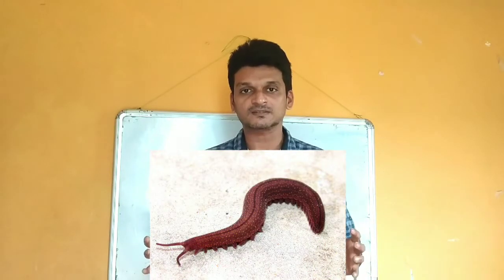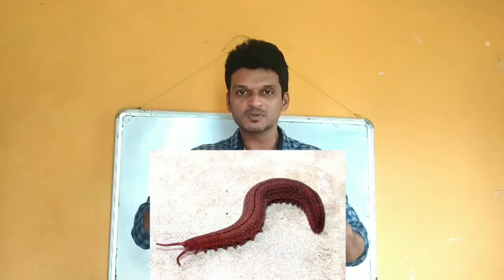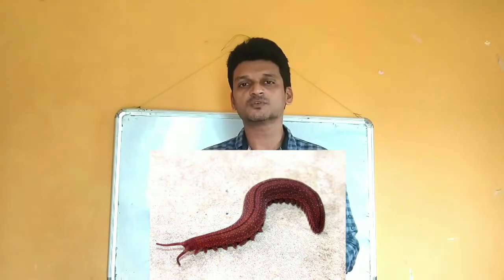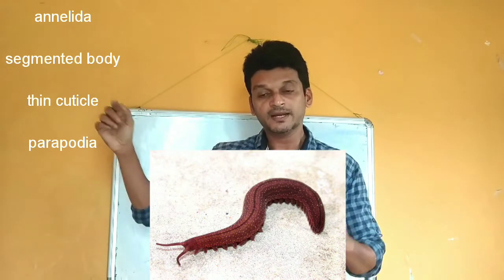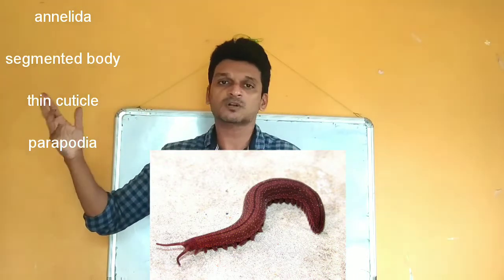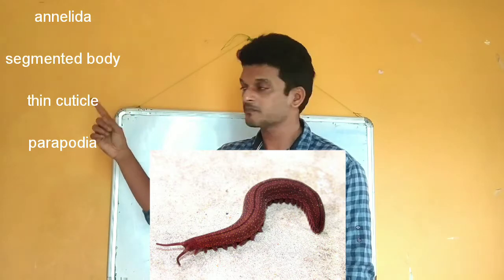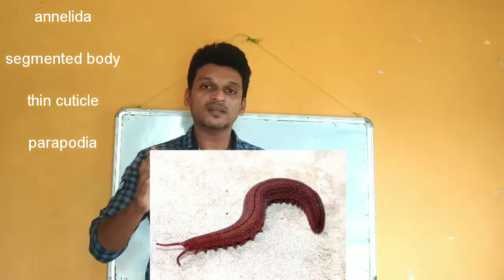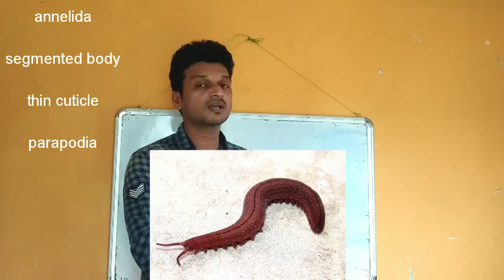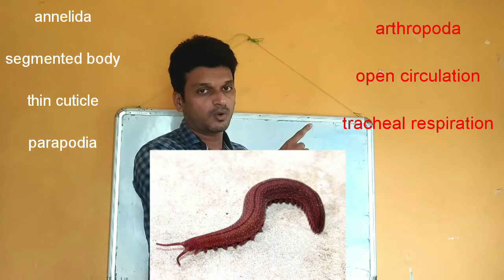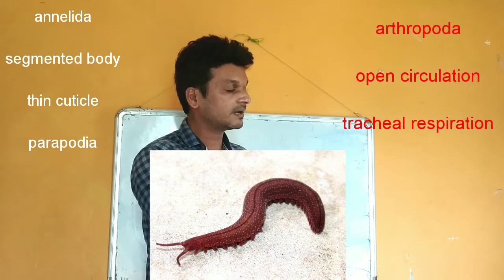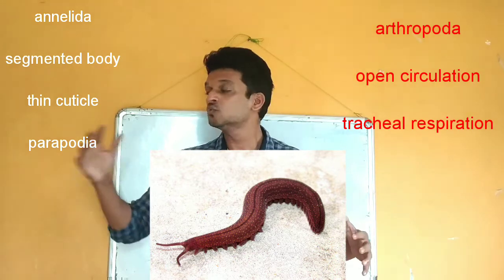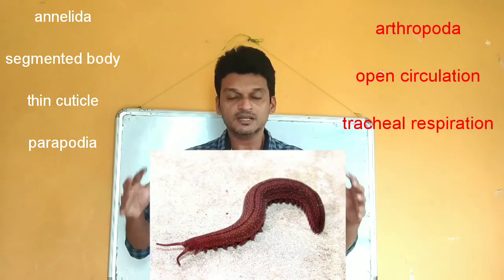Our first living connecting link is Peripatus. This organism shows characteristics of two different groups of animals. It has some characteristics of Annelida — segmented body, thin cuticle, and presence of parapodia. But at the same time it also has some characteristics of Arthropoda — open circulation and tracheal respiration. That is why Peripatus is called a connecting link between Annelida and Arthropoda.